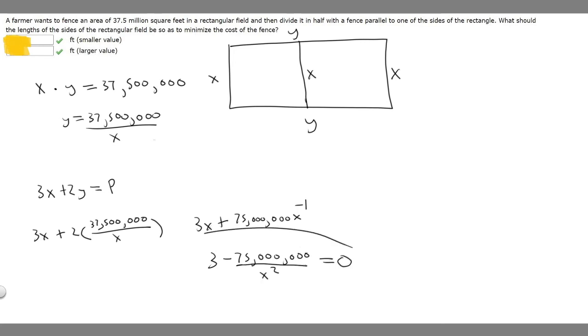So what we want to do is set this equal to 0 and then solve. If we move this to the other side, we'll get minus 75,000,000 over x squared is equal to minus 3. And then let's multiply both sides by x squared.